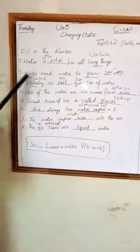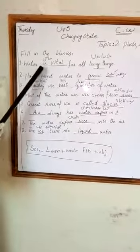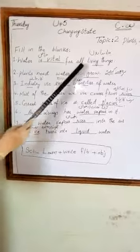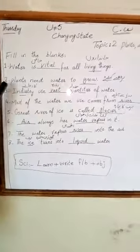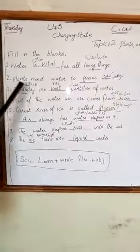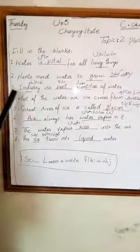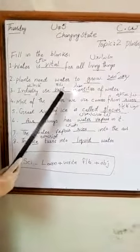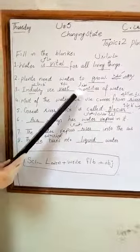First of all, explain the filling in plants. Point number 1: Water is vital for all living things. Pani tamam jahatane ke zhrohti hai. Number 2: Plants need water to grow. Podo ko bharani ke liye paani ki zhrohti hai. Number 3: Industries use vast quantities of water. Karthani jo hai paani ki zhra matna is tamaat kattay hai.